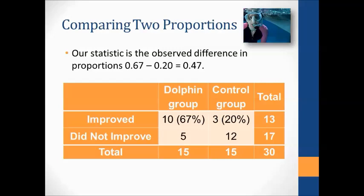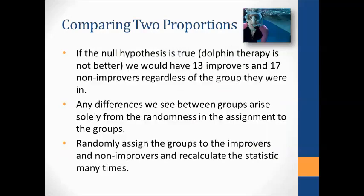Here are the results from that study. There are 15 in each group — 15 in the control group and 15 in the dolphin group. If there was no association, we'd expect those 13 people who improved to be about equally distributed between the two groups — something like seven and six, or eight and five. But here we've got 10 and three. The question is: what's the probability we get something as extreme as 10 and three just by chance, if in fact they were evenly distributed?